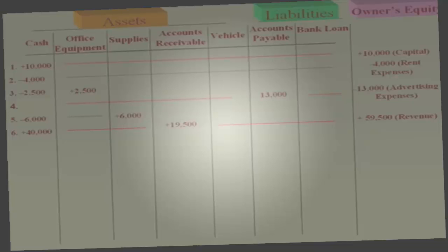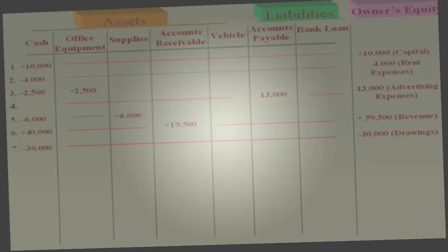Transaction 7: the owner withdrew $30,000 for personal use. Cash goes down, and owner's equity goes down. When an owner pulls money out of the business, it's bad for equity. So owner's equity is minus $30,000 and cash is minus $30,000.